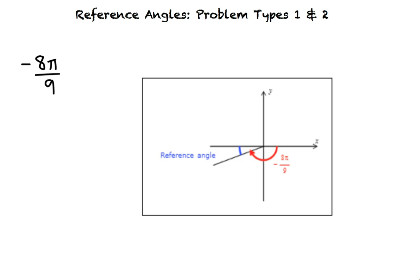To find the reference angle, we use the fact that a half turn involves π radians. This means that the reference angle and 8π ninths add up to π, which tells us that the reference angle equals π minus 8π ninths. When we solve this, we see that the reference angle equals π ninths.